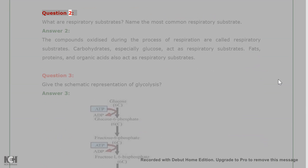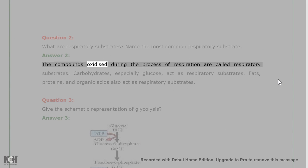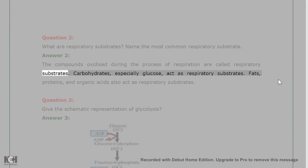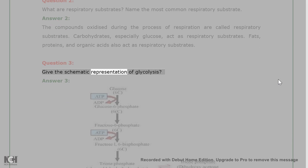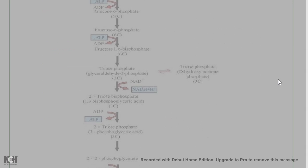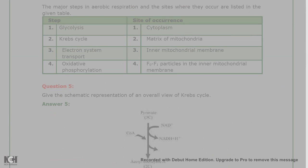Question 2: What are respiratory substrates? Name the most common respiratory substrate. Answer 2: The compounds oxidized during the process of respiration are called respiratory substrates. Carbohydrates, especially glucose, act as the most common respiratory substrates. Fats, proteins, and organic acids also act as respiratory substrates.